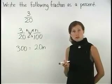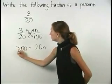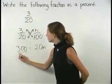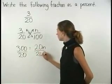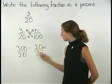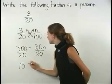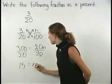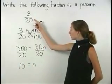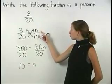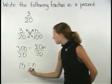Next, dividing both sides of the equation by twenty, we have fifteen is equal to n. So three-twentieths is equal to fifteen over one hundred, or fifteen percent.